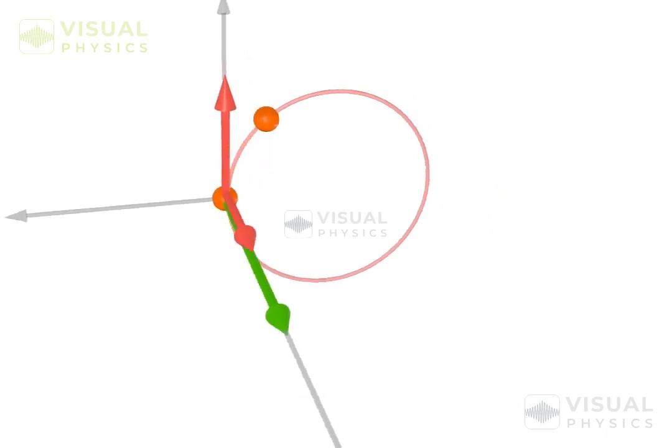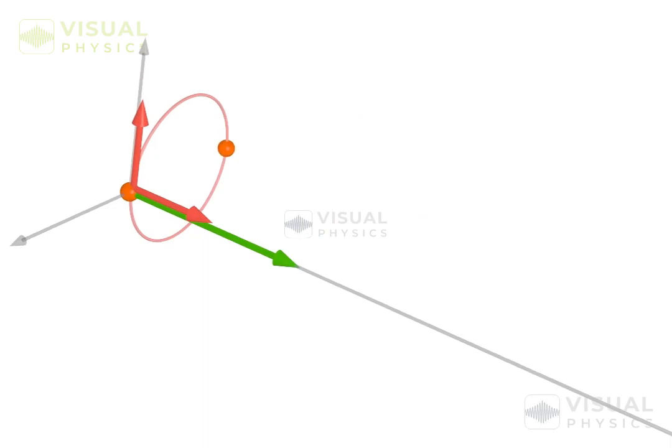But the particle also has a component of velocity in the direction of magnetic field. We know that a particle moving parallel to the magnetic field does not experience any magnetic force, and thus its motion is not affected.